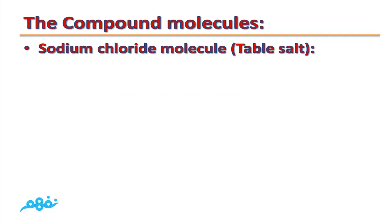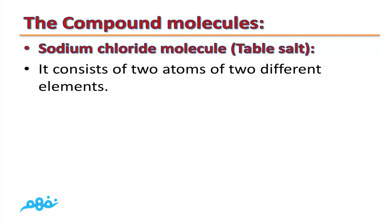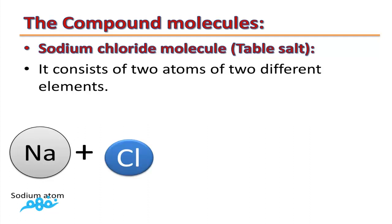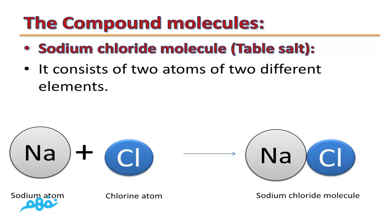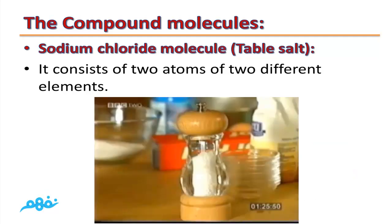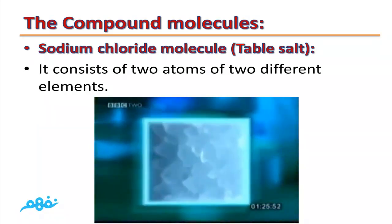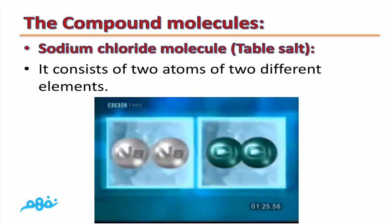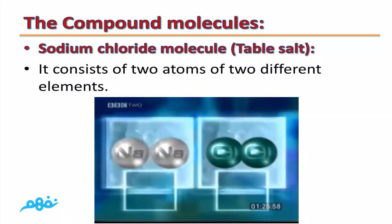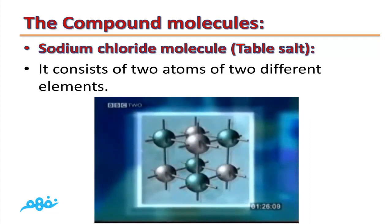Sodium chloride molecule, or table salt, consists of two atoms of two different elements: one sodium atom plus one chlorine atom. They combine together to form the sodium chloride molecule. The salt crystals are formed from one sodium atom and one chlorine atom arranged in a crystal form.